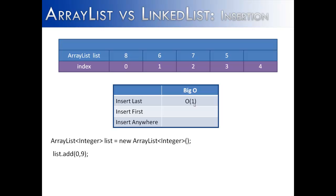Inserting at the beginning of the list is a little bit different, and we're going to have to manipulate the data. One way to do that is to move the data over by 1, and then insert an item to the front of the list. We've shifted every item over 1, and now we insert the item. Depending on the size of the list, we'll have to shift more items, so that operation is going to have a big O of n. The insertion itself would be constant, but shifting the items over is O(n).